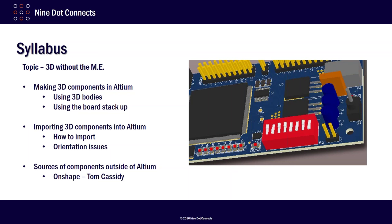I'm going to talk about components you can find outside of Altium — there are two sites I'll quickly show you. Then I'll turn the webinar over to my colleague Tom Cassidy, who's going to talk about a tool called Onshape. We don't have a partnership with them and we don't sell their product. However, Tom's used this tool a number of times for customer projects and found it to be not only cost effective, but very efficient.